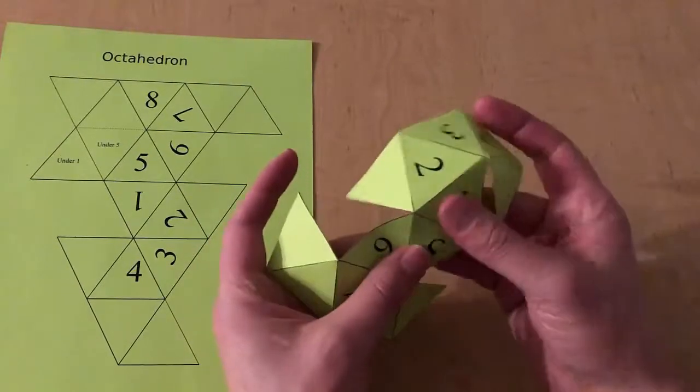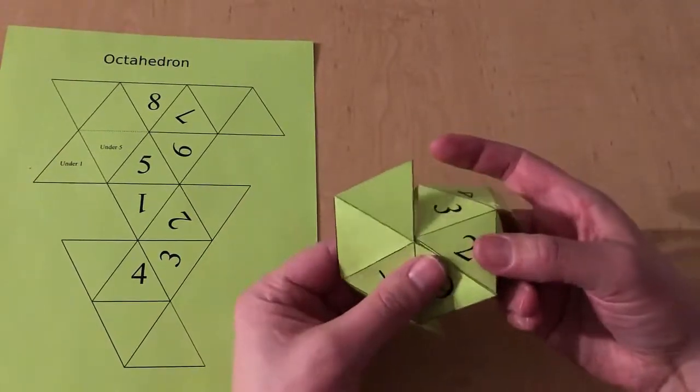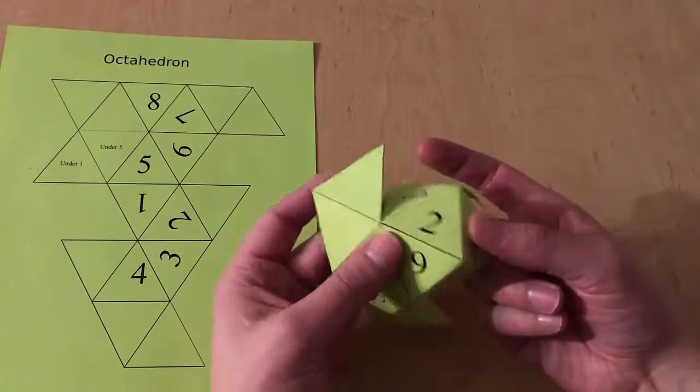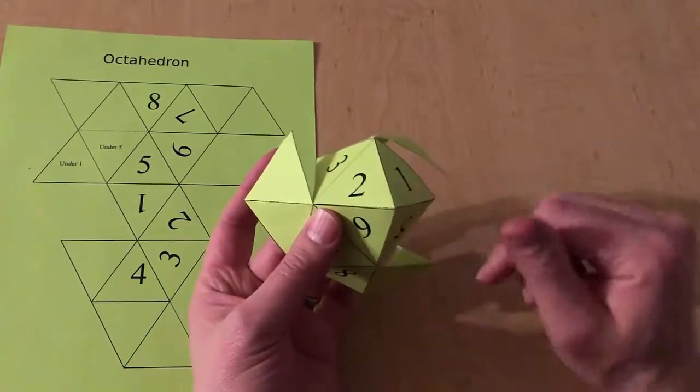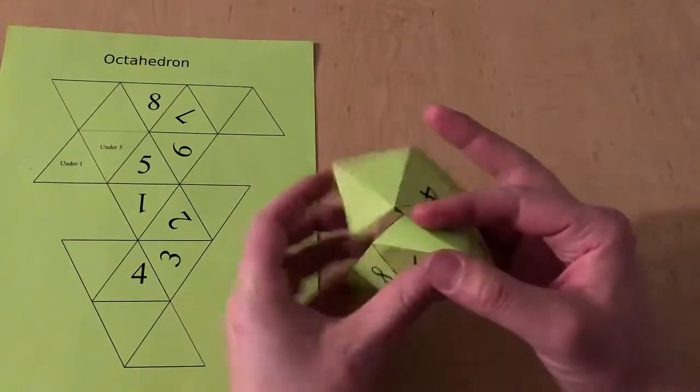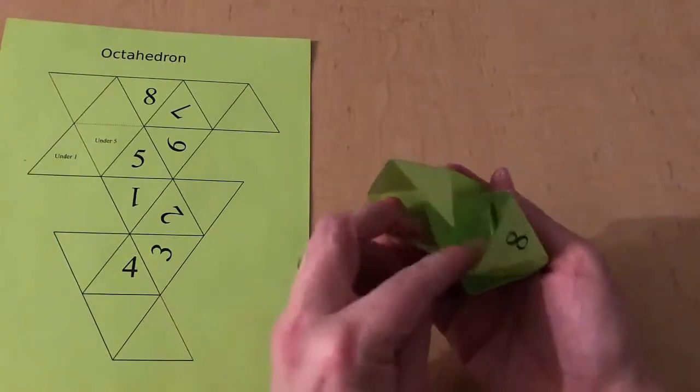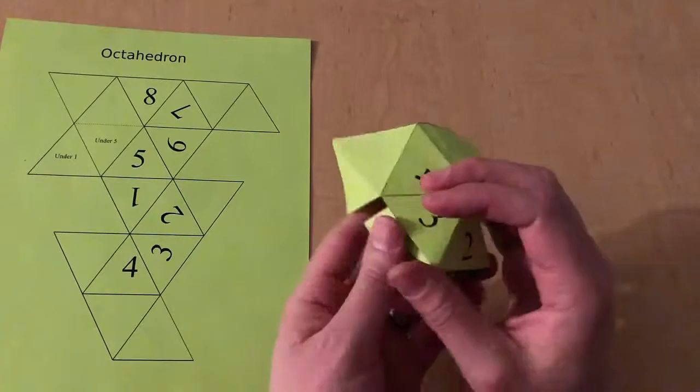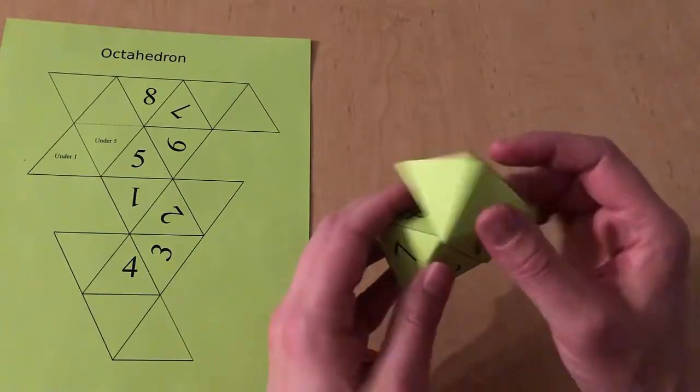And then I'm gonna tuck the blank tab under six to create the upper half of an octahedron and then start working my way around. The last face I'm gonna assemble is four.